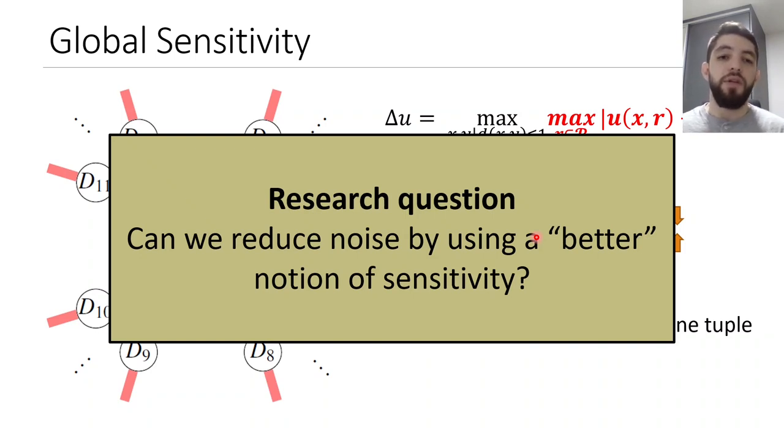So what we want is low sensitivity. Our research question is, can we reduce noise by using a better notion of sensitivity, or a smaller notion of sensitivity?